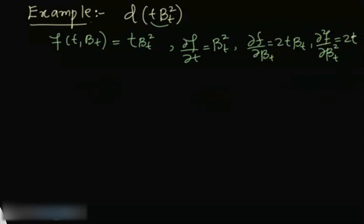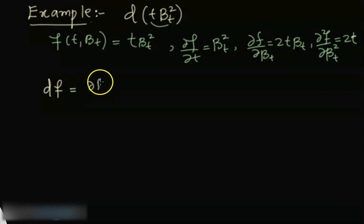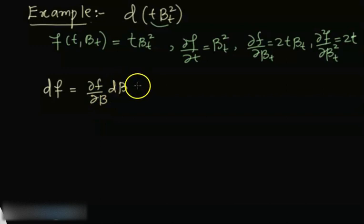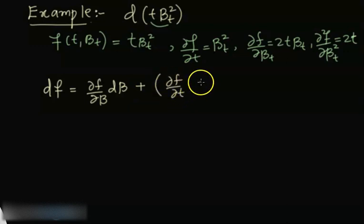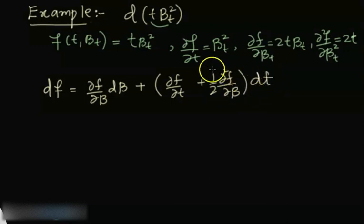So now we know that the formula is given by: the differential of f is equal to the partial derivative of f with respect to B times dB, plus the partial derivative of f with respect to t times dt, plus one-half times the second partial derivative of f with respect to B times dt. So we will insert the values that we have calculated above.